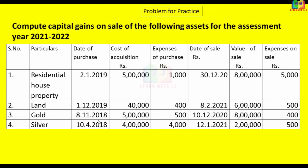Now we have a new problem to work out. For other assets: residential house property — holding period is 24 months; land — 24 months; gold — 36 months; silver — 36 months. If held beyond these periods, it is long-term; otherwise, short-term capital gain applies. We need to classify assets based on date of purchase and date of sale to determine short-term or long-term.